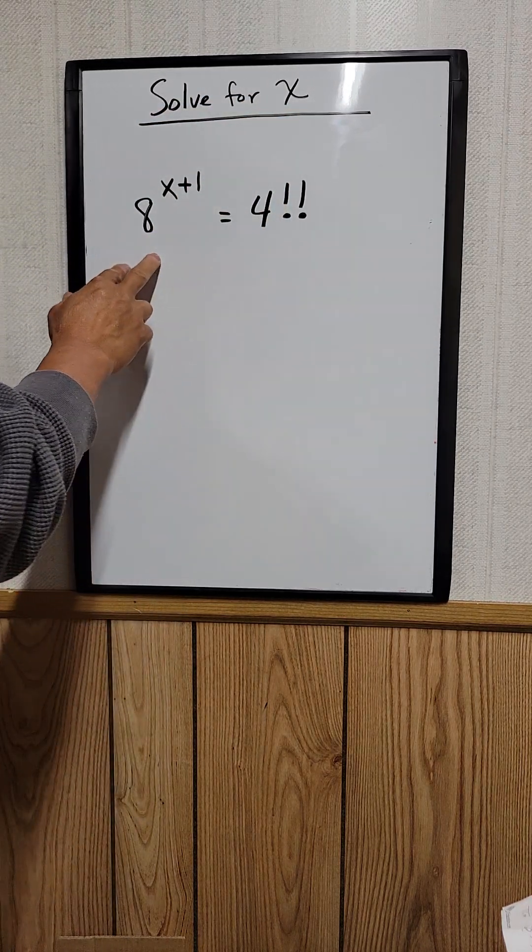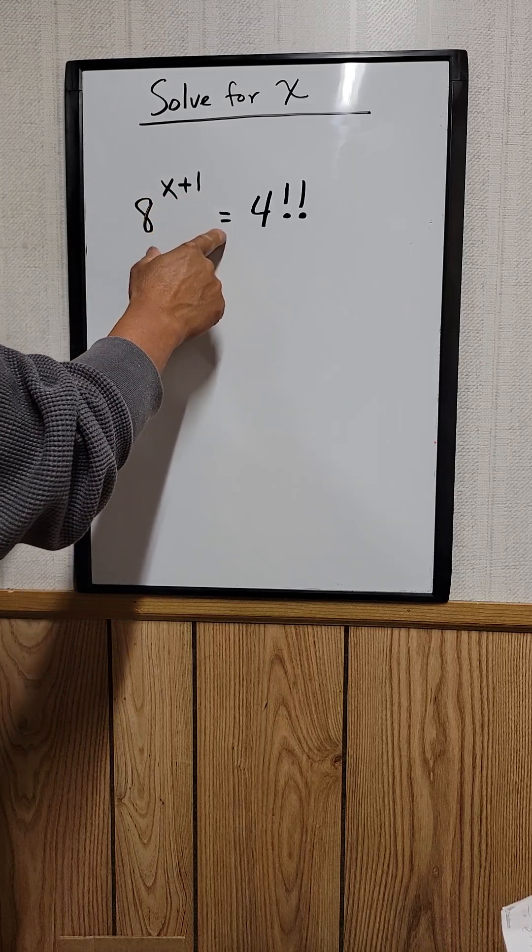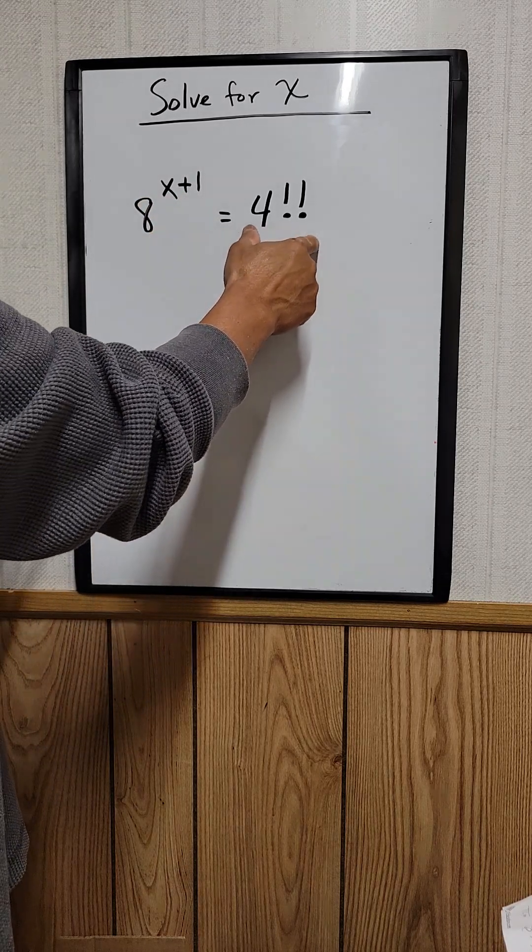Solve for x for this equation: 8 raised to the power x plus 1 equals 4 double factorial.